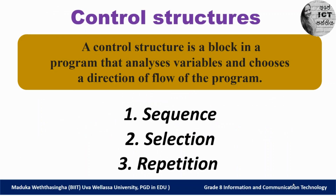Simply, there are three control structures based on the direction of the data flow. A control structure is a block in a program that analyzes variables and chooses a direction of flow of a program. Based on the direction of the data flow, three control structures can be identified.